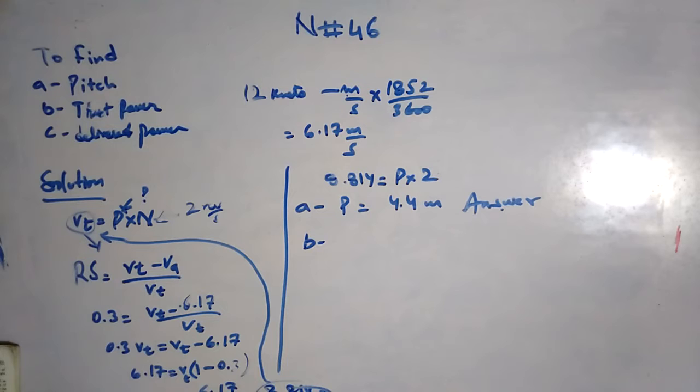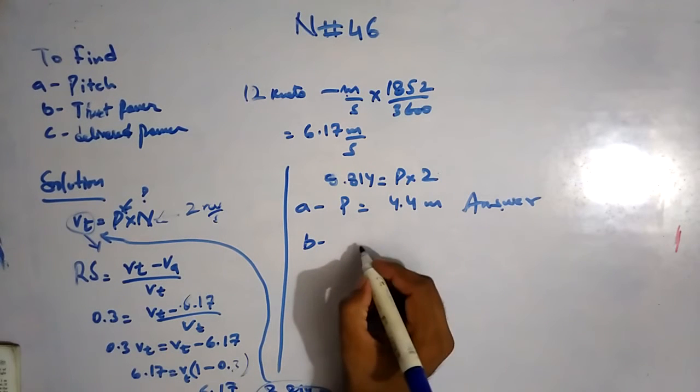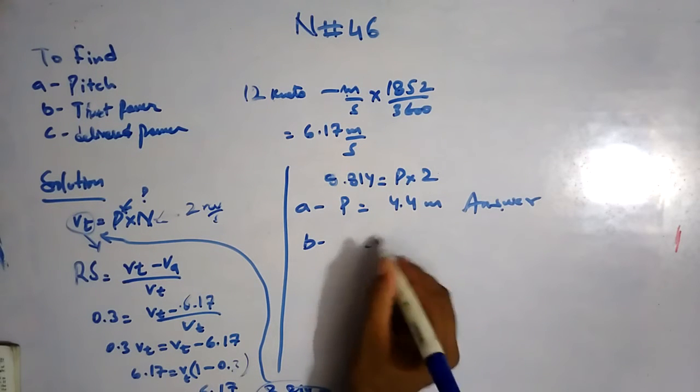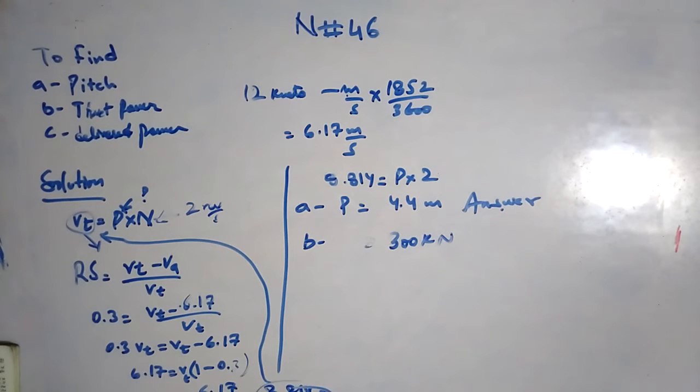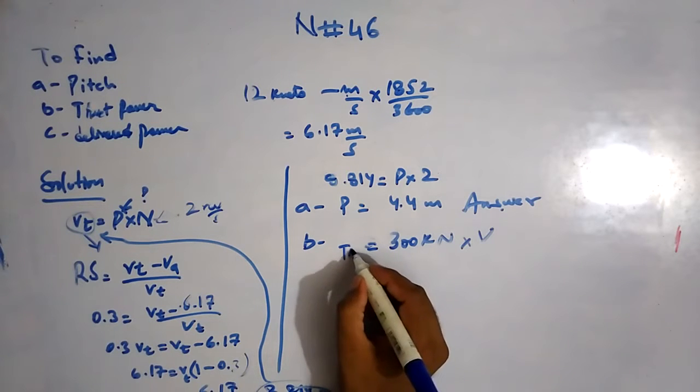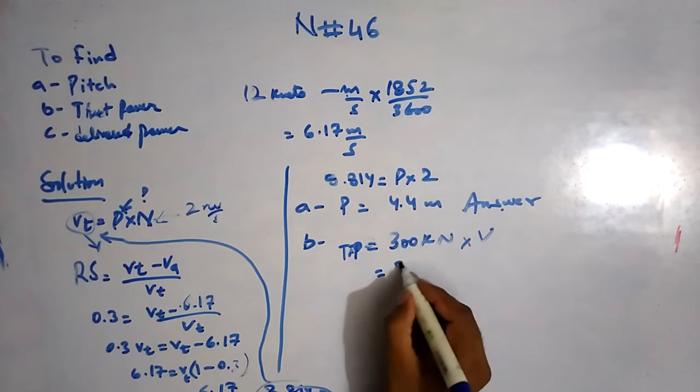For part B, thrust power: the torque absorbed by the propeller is given, and the thrust delivered is 300 kN. As I have thrust delivered, I have to use this thrust of 300 kN. So thrust delivered multiplying with the speed of advance will give me thrust power.